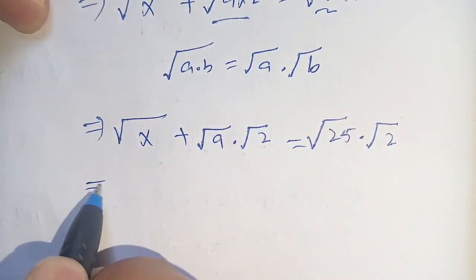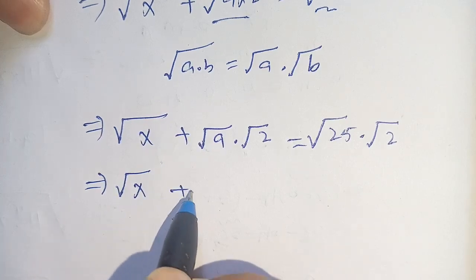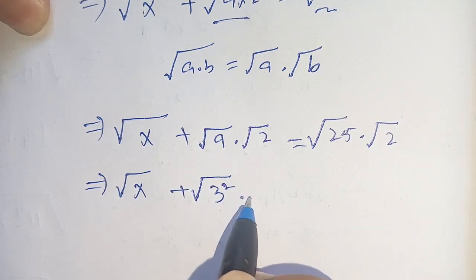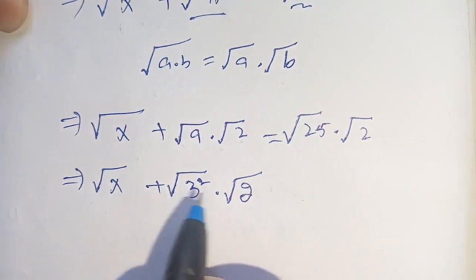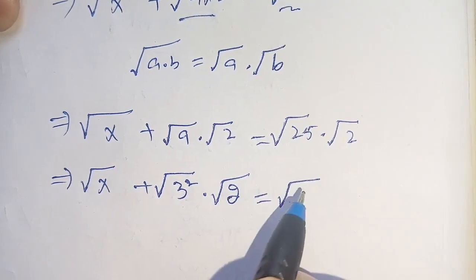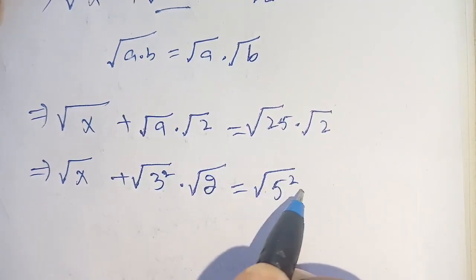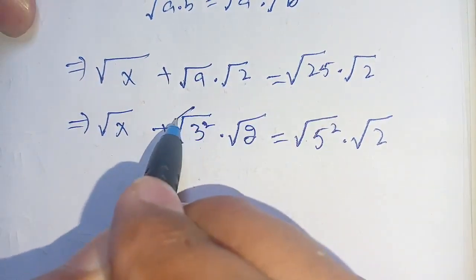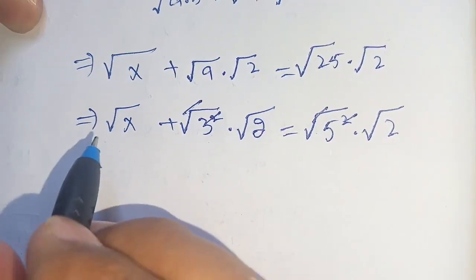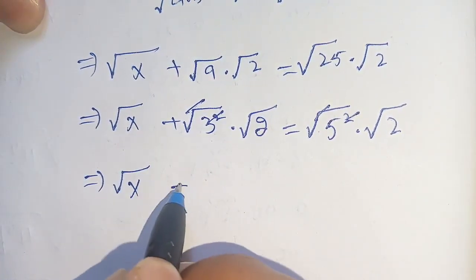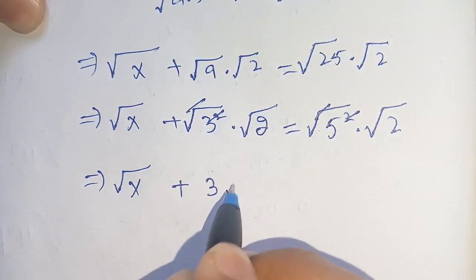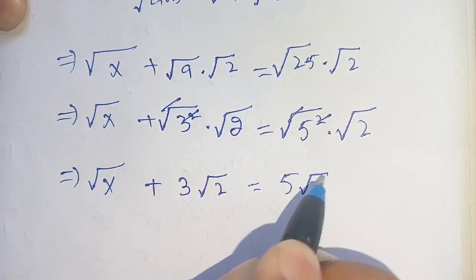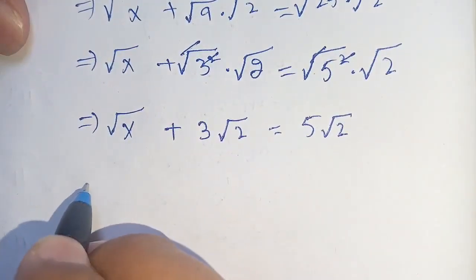In the next step, square root of 9 can be written as square root of 3 squared, and square root of 25 can be written as square root of 5 squared. We cancel the square with the square root and we get: square root of x plus 3 times square root of 2 is equal to 5 times square root of 2.